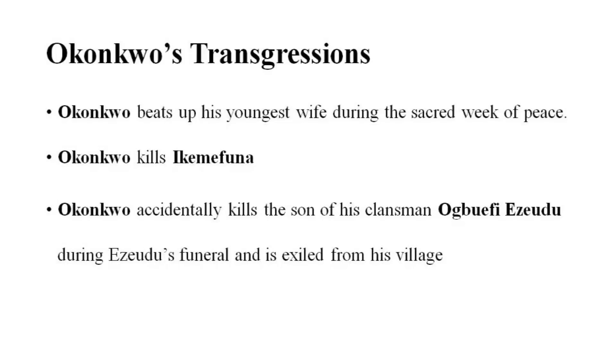The next thematic division aims to discuss the various transgressions that Okonkwo commits, and this in fact forms the very meat of the novel. I have listed three points under the heading 'Okonkwo's Transgressions,' and each of these three points lists a murder or an attempted murder committed by the protagonist Okonkwo. Please note that the words written in bold letters in all of these slides are names of characters in the novel — take special care in remembering these characters.